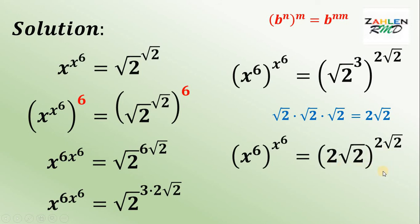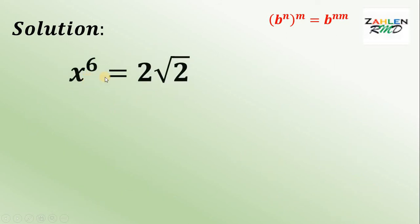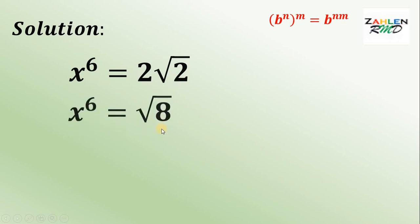Clearly, x raised to the 6th power equals 2 square root of 2. We will focus on this equation: x raised to 6 equals 2 square root of 2. Now, we know that 2 is simply square root of 4, and square root of 4 multiplied by square root of 2 equals square root of 8.